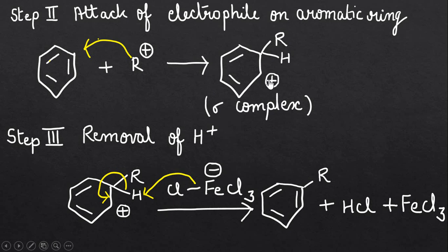This sigma complex is stabilized by resonance due to the movement of pi electrons. These pi electrons get delocalized over the entire ring. In the next step, which is the removal of acidic proton, we can see FeCl4 minus which was generated in step one.